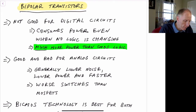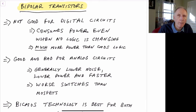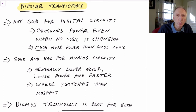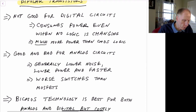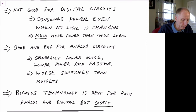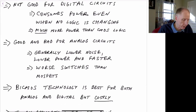The reason you're consuming power is that there's current flowing into the base of a bipolar transistor, as opposed to a MOSFET transistor where effectively zero current flows into the gate. They also don't operate as very good switches, so they don't work nearly as well as CMOS transistors for digital logic.